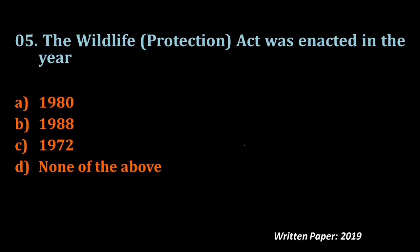Question number five: The Wildlife Protection Act was enacted in the year. We have three acts already: Assam Forest Regulation 1891, Forest Conservation Act 1980, and now Wildlife Protection Act. The options are 1980, 1988 (when the third forest policy of India was adopted), 1970, or none of the above. The Wildlife Protection Act, which applies to all wildlife and habitat destruction cases, was enacted in 1972.